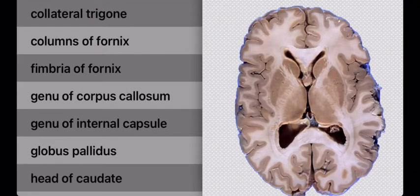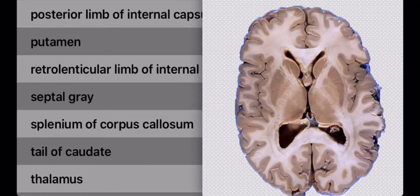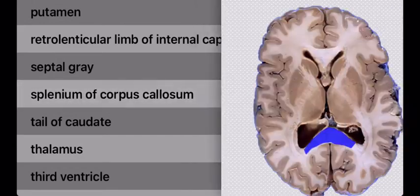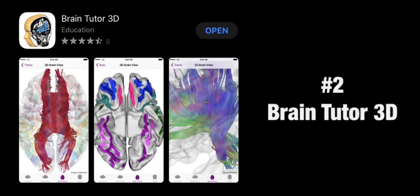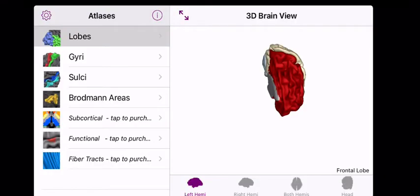But it doesn't really give you much extra info, and because you can't spin the brain around, this ranks number three out of three of the brain apps. Next up though, number two: the Brain Tutor 3D.